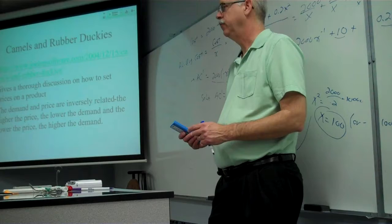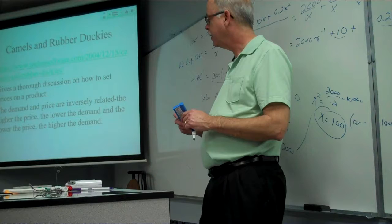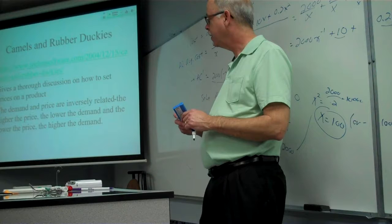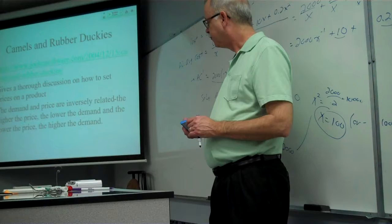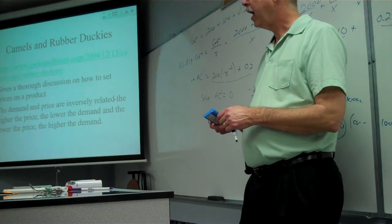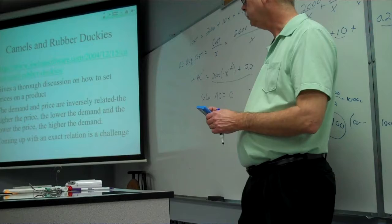Somewhere in the middle there's a sweet spot — just the right price with just the right demand — to maximize revenue. That's what we're looking for: what price should we set? If we lower the price we could sell more, but get less money per unit. We need to figure out where demand and price are related, how that translates into revenue, and then find the maximum revenue.